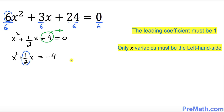Take the coefficient of x, which is 1 over 2. I want you to divide this number by 2. Dividing by 2 is the same as multiplying by 1 over 2. Once you multiply: 1 times 1 is 1, and 2 times 2 is 4, giving you 1 over 4.